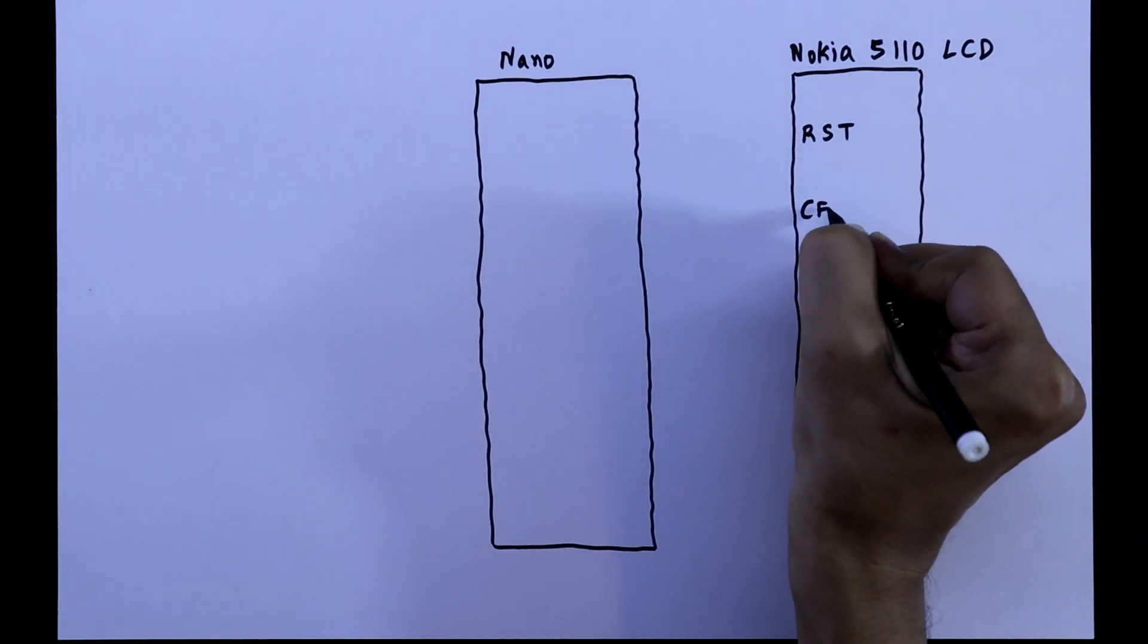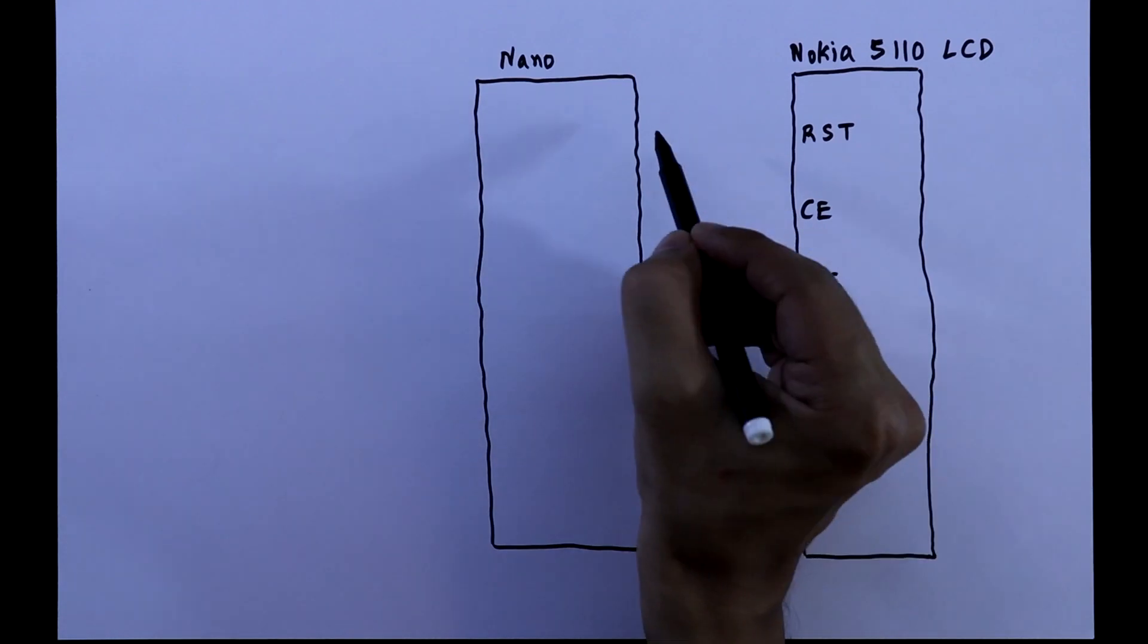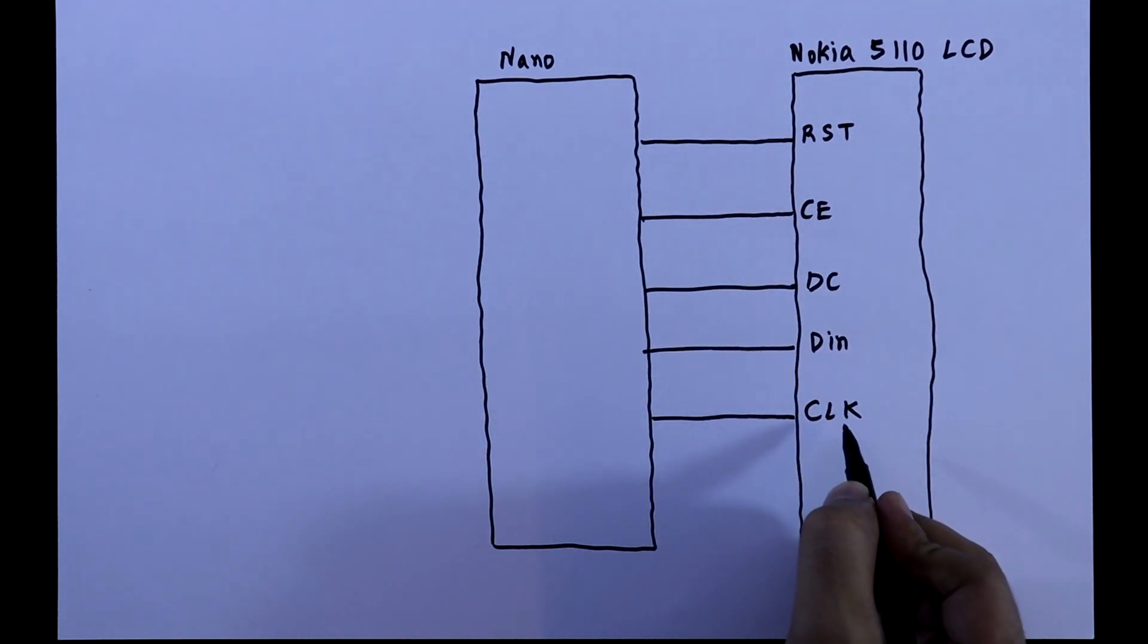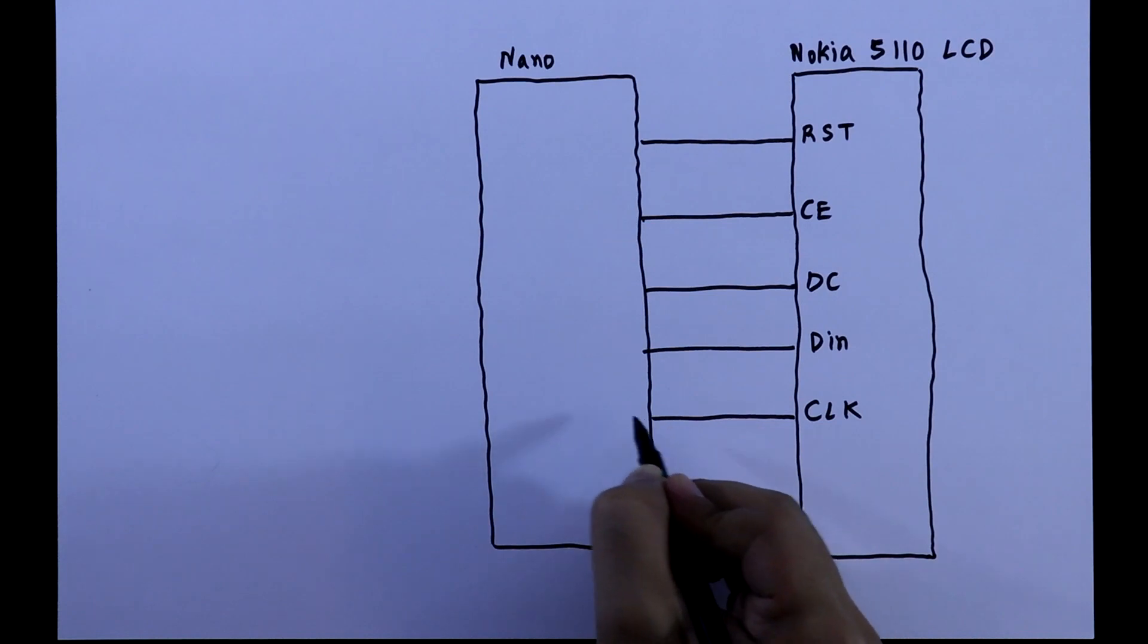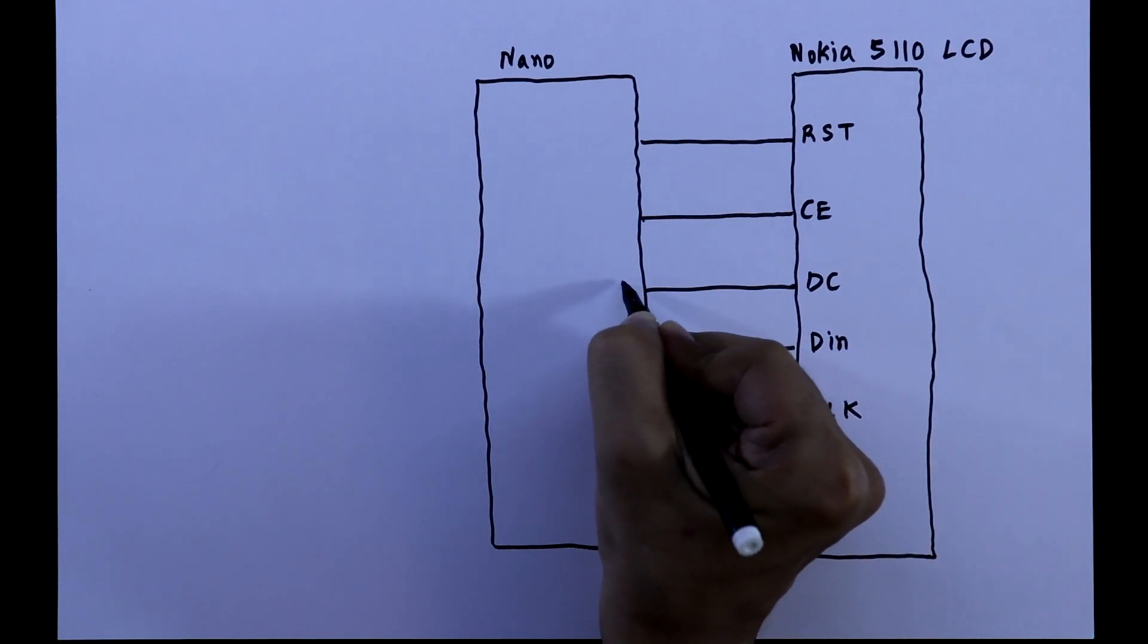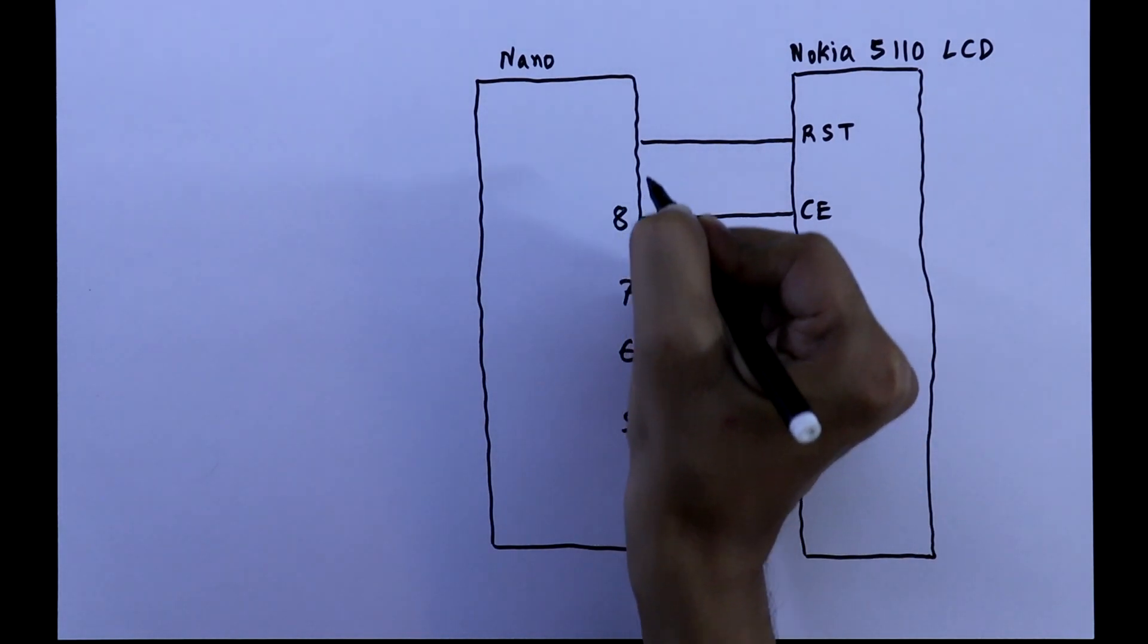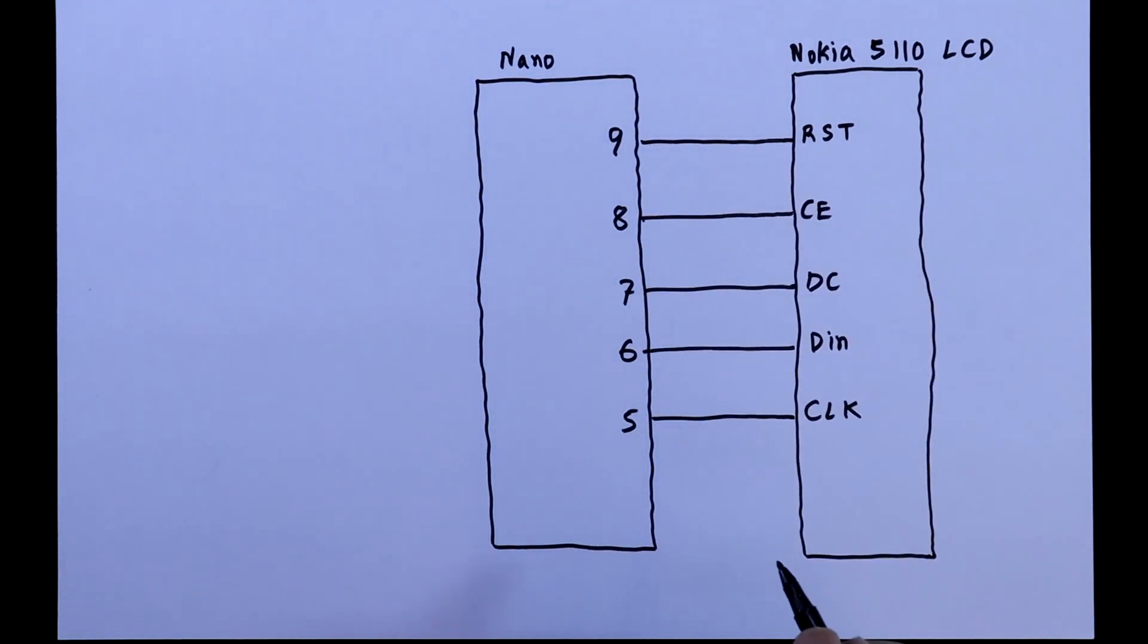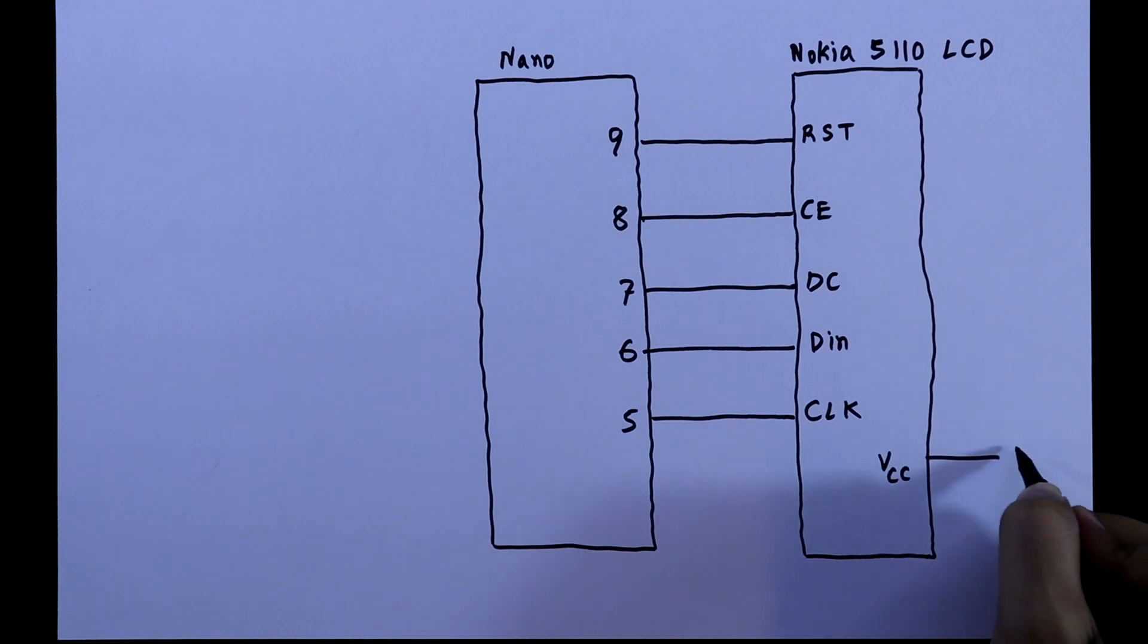The display has five data pins and these are connected to Arduino. This clock pin is connected to pin 5, data in pins 6, 7, 8, and 9. VCC is connected to plus 5 volts.